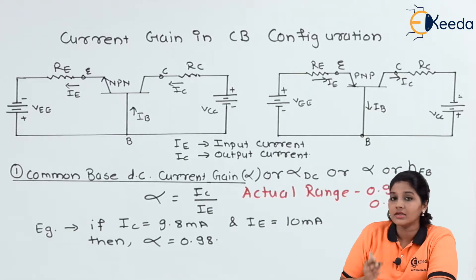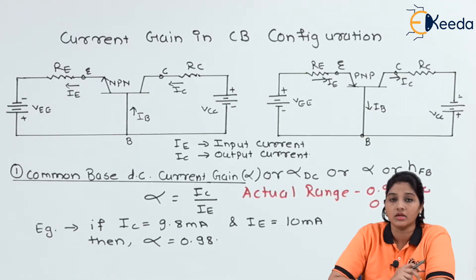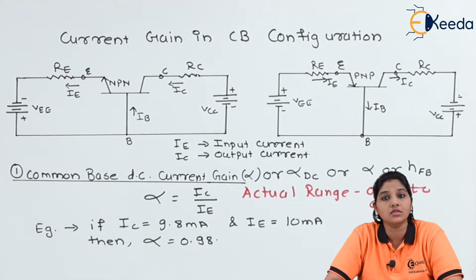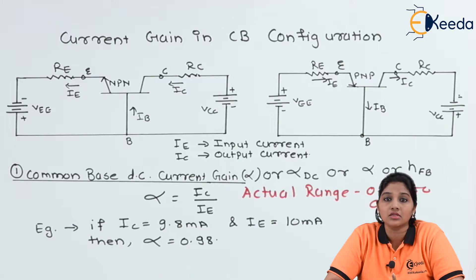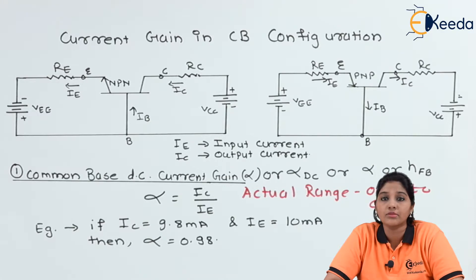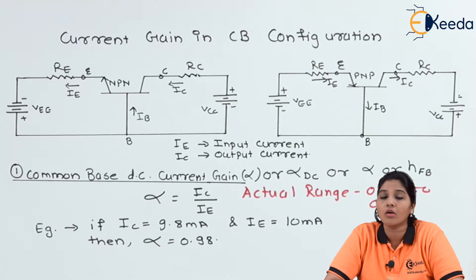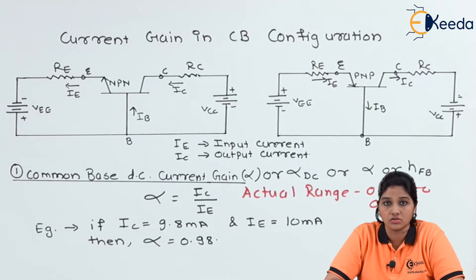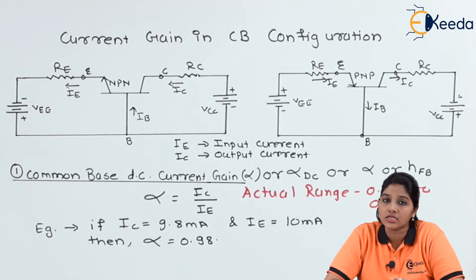Now let's have a look at current gain. Gain is nothing but the ratio of output to input, and current gain is nothing but the ratio of output current to input current. The current can be AC or DC. Therefore, there are two types of current gain to consider when talking about current gain in various configurations of a transistor: DC current gain and AC current gain.